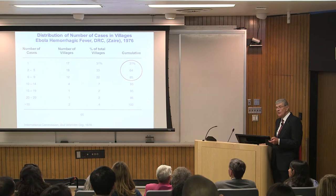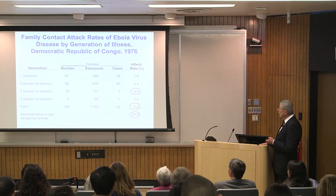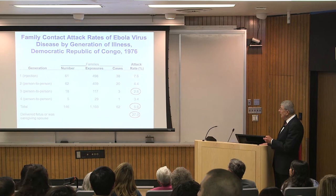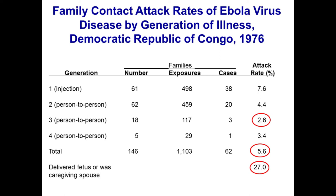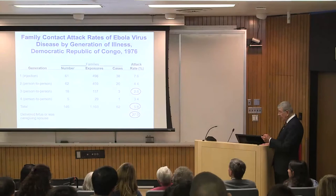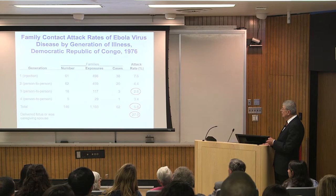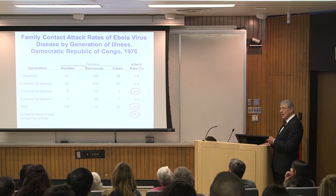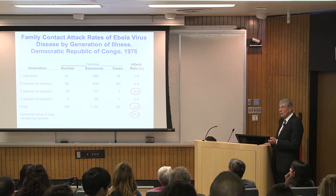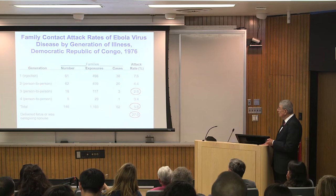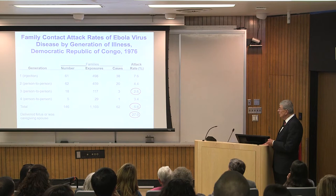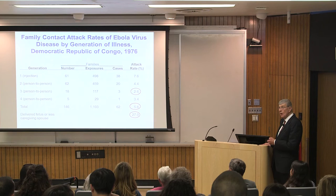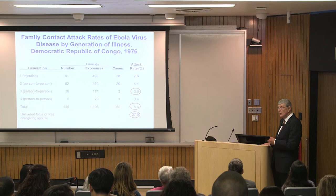It wasn't such a firestorm as we had been led to believe. Here is probably the most important epidemiologic slide: the secondary attack rates. The secondary attack rates were very, very low. That's why we say Ebola — at least in that epidemic — is not highly transmissible. It is highly fatal. However, if you were delivering a fetus or were a caregiving spouse, you had a higher secondary attack rate.